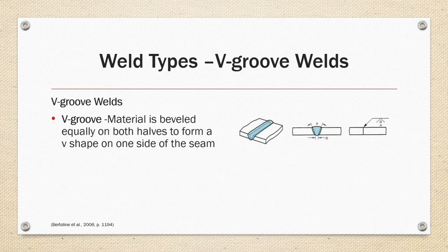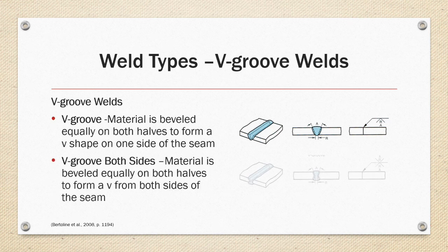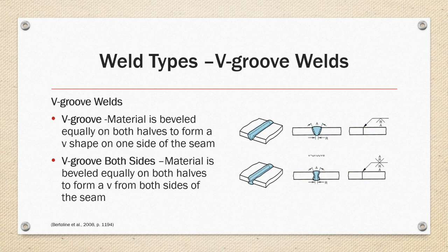V-groove welds: a V-groove weld is where the material is beveled equally on both halves to form a V-shape on one side of the seam, with bevel angle A and root opening R, welding from the same side as the arrow. The second example is a V-groove on both sides, where the material is beveled equally to form a V from both sides of the seam. Welding is performed from both sides, and the symbol shows the V symbol with A and R defined on both sides of the reference line.